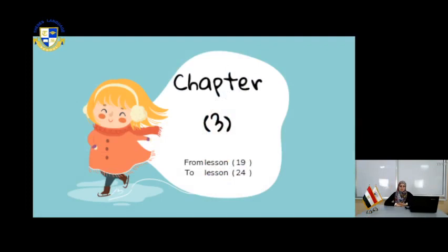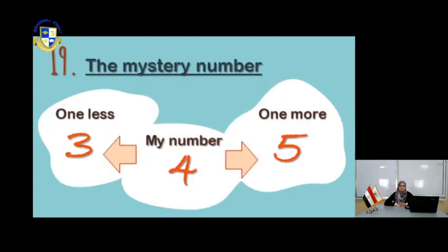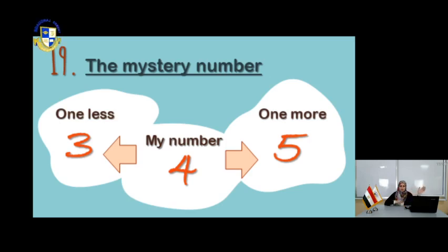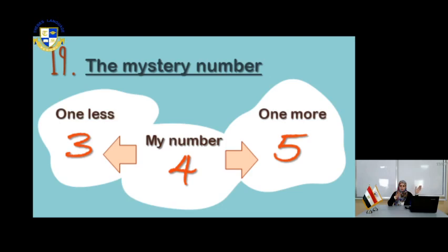In the next page, we will know how to find the mystery number. You have the number 4. You have one number after it and one number before it — one more number and one less number. One more number from 4 is 5. One less number from 4 is 3. So you have 3, 4, and 5.